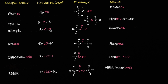Aldehydes have a CHO functional group, represented in this example here. The name of the aldehyde is ethanal. A lot of students sometimes get confused between alcohols and aldehydes in terms of their names because they sound similar. But you can quite clearly see that you've got an AL at the end, which signifies that you're dealing with an aldehyde.